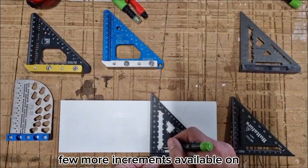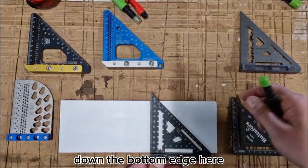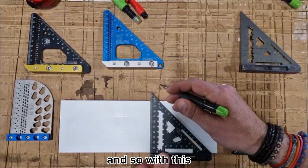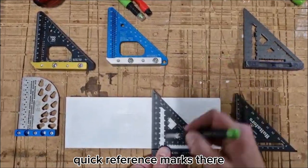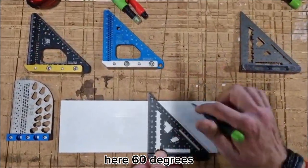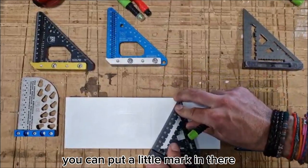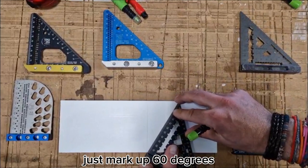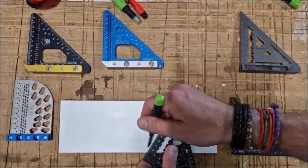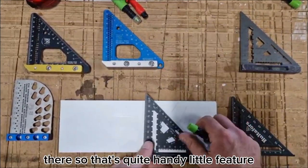A few more increments available on the bottom edge here. You've also got a couple of quick reference marks, so for example here 60 degrees, you can put a long mark in there, pivot on the corner, and then you can nice and quickly just mark up 60 degrees. That's quite a handy little feature.